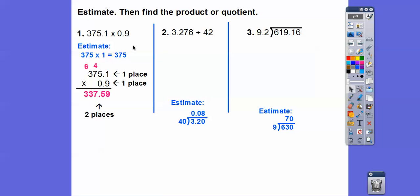All right. So on this one, just go ahead and multiply this times this, like whole numbers. And then there's one decimal here, there's one decimal here. So that means move this one over two places. So 337.59.